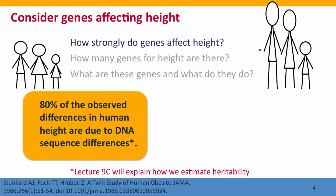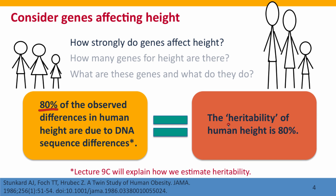The concept of heritability is a measure of how much of the differences in phenotype that we see are due to differences in genotype. So in particular for height, we can say that we've measured both the differences in height and an estimate of DNA sequence differences. And we can say for height, 80% of the observed differences in height — whether you're tall or short, how tall or short you are — are due to differences in DNA sequences. We then restate this by saying that the heritability of human height is 80%.